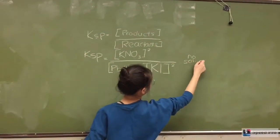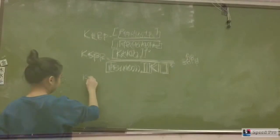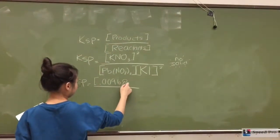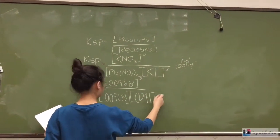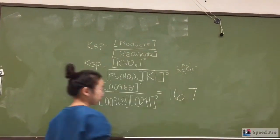Ksp is the division of concentration of products over reactants. Since lead-2 iodide is a solid, it is not included in the equation. Our Ksp value was 16.7, which is greater than 1, indicating that the reaction went almost entirely to completion.